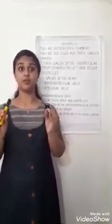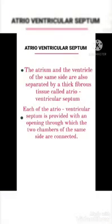The ventricles are two lower, thick-walled chambers. The wall separating the two ventricles is called the interventricular septum. The atrium and ventricle of the same side are also separated by thick fibrous tissue called the atrioventricular septum.